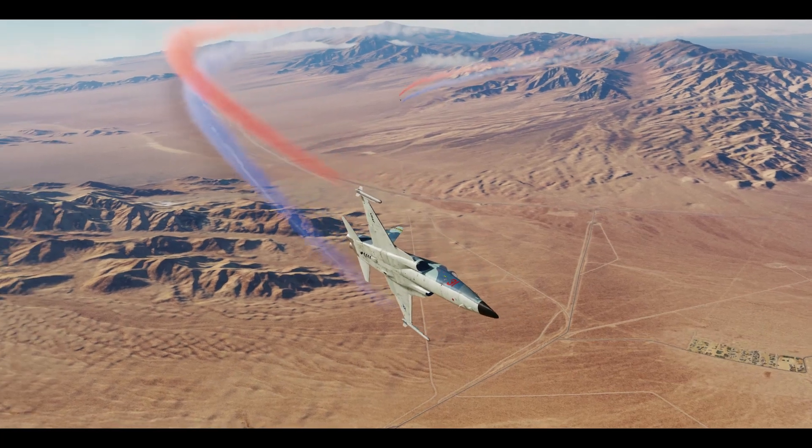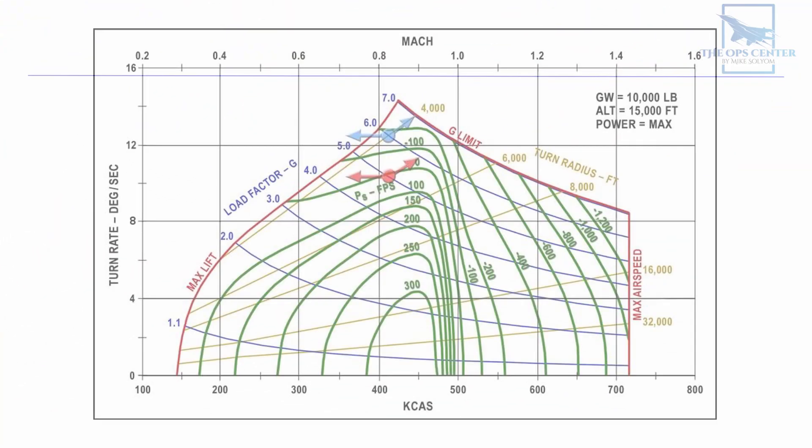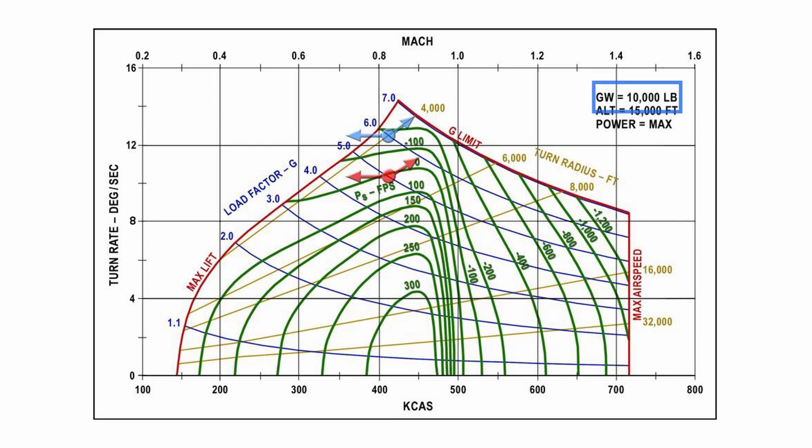We went over a lot just now, so let's do a quick recap. EM diagrams are made for specific parameters including aircraft weight, altitude, and throttle setting. Lighter weight, lower altitude, and higher throttle settings will give you better performance. A diagram only works for that specific set. It won't be accurate if the parameters don't match up.